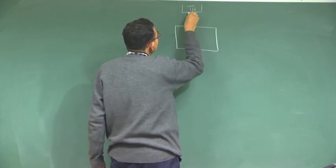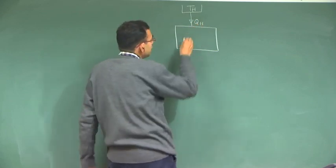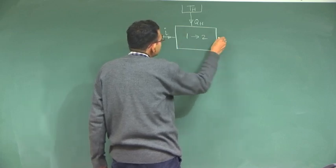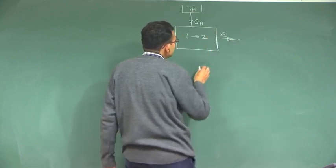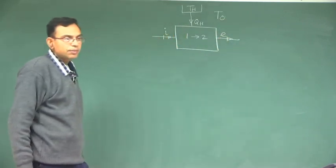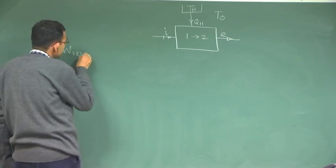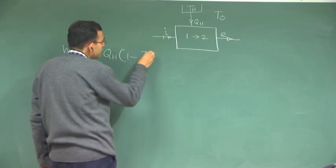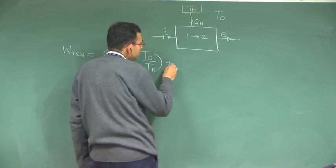We have a heat source from which there is a heat transfer Q_h, there is a change of system from state 1 to state 2, and there is also inlet and exit, and the surrounding temperature is T_0. The reversible work associated with this is the reversible work associated with the heat transfer plus the reversible work associated with the change in state.